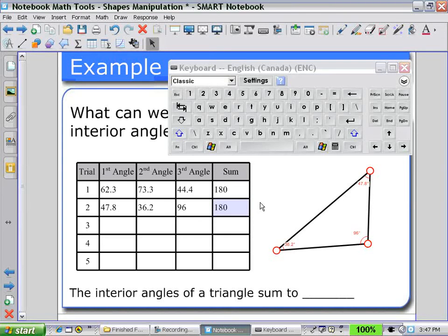They can continue this for a number of triangles, and then conclude that the interior angles of a triangle sum to 180 degrees.